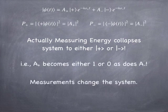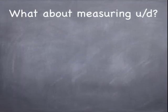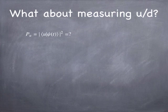Measurements are going to change the system — any time you make a measurement, the system is in a new state and you have to start over. What about if you measure up or down? If you measure up or down, you've got to ask what's the amplitude to be up or what's the amplitude to be down, and calculate the probability based on that.